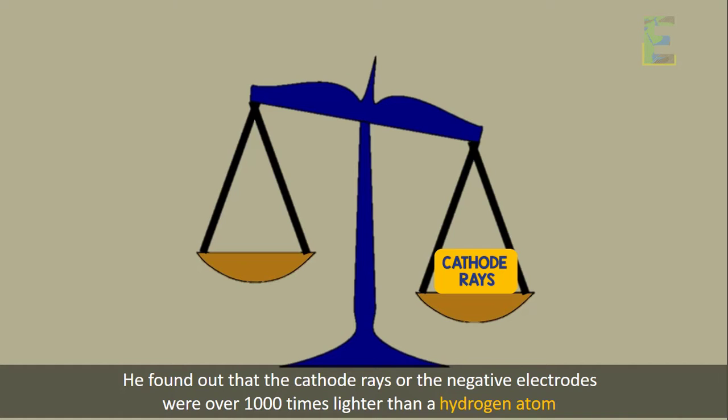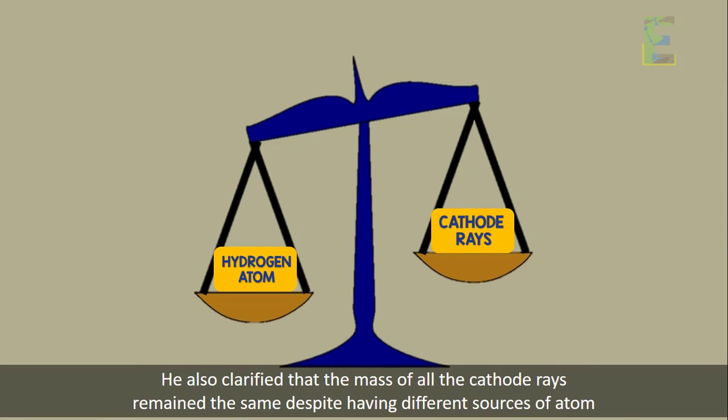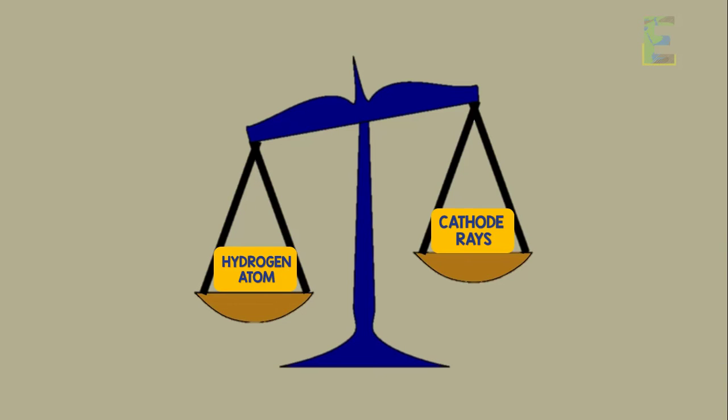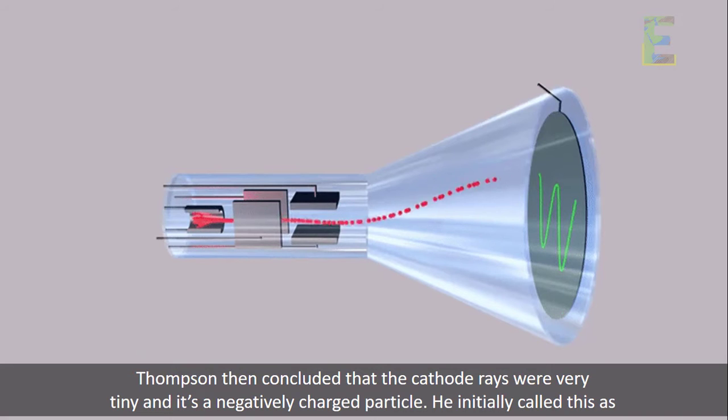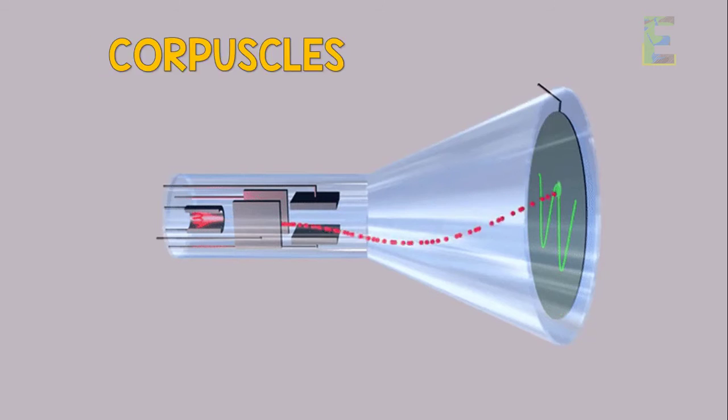He found out that the cathode rays, or the negative electrodes, were over 1,000 times lighter than a hydrogen atom. He also clarified that the mass of all the cathode rays remained the same despite having different sources of atom. Thompson then concluded that the cathode rays were very tiny and it's a negatively charged particle. He initially called this as corpuscles, which we now call as electrons.